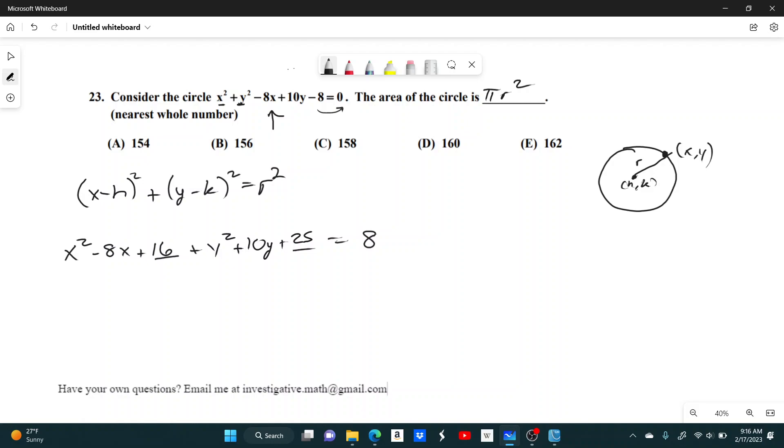But of course, we're adding this stuff to the left-hand side. So to maintain the equality, we have to add it to the right-hand side. So it's 8 plus 16 plus 25, which I'm pretty sure is 49.